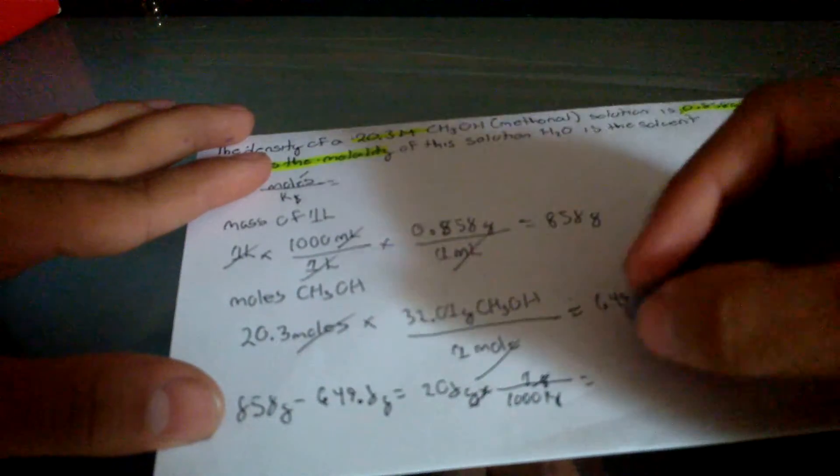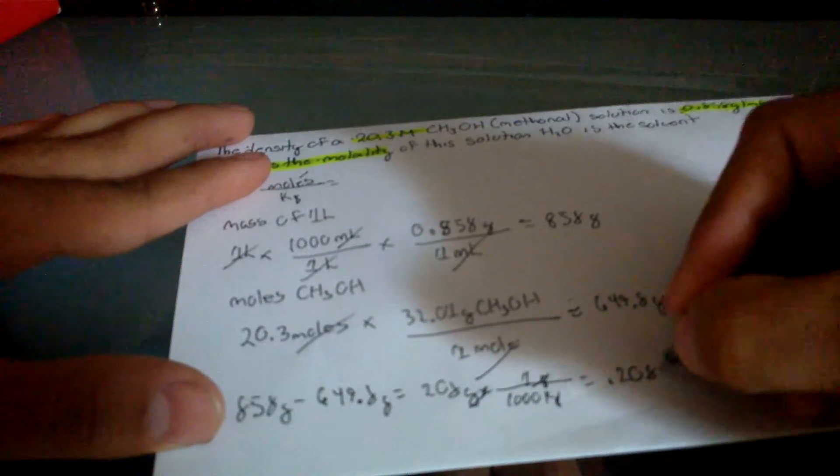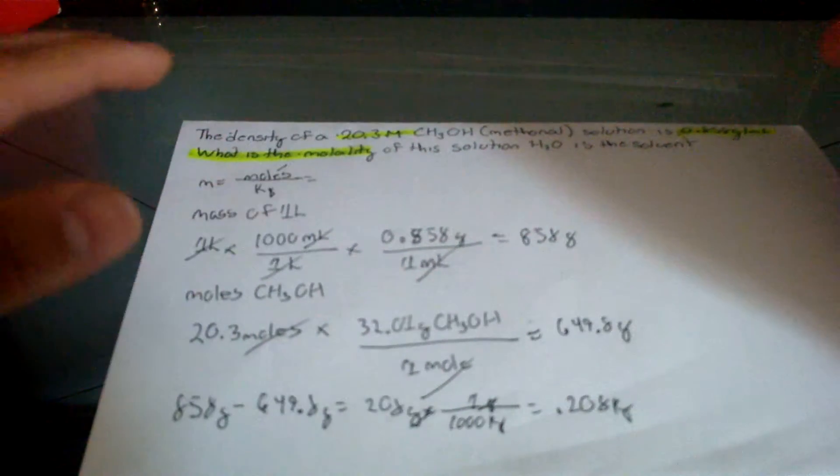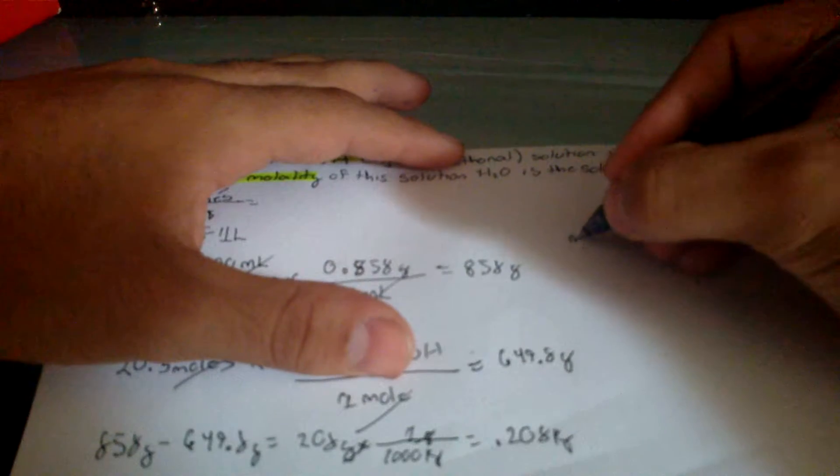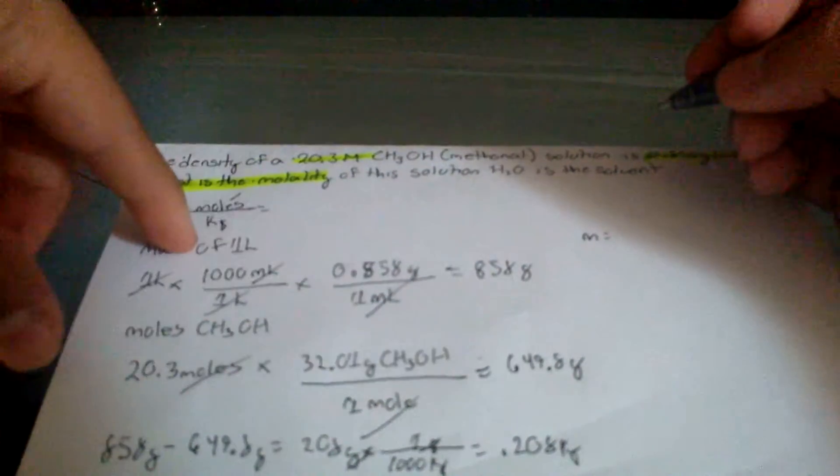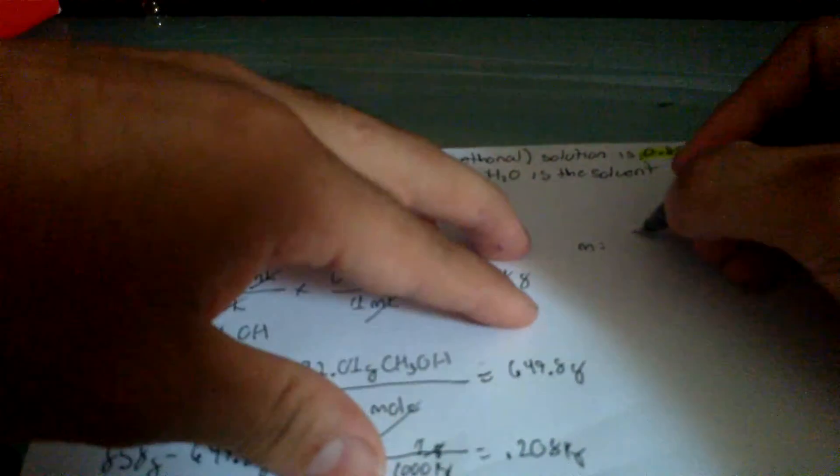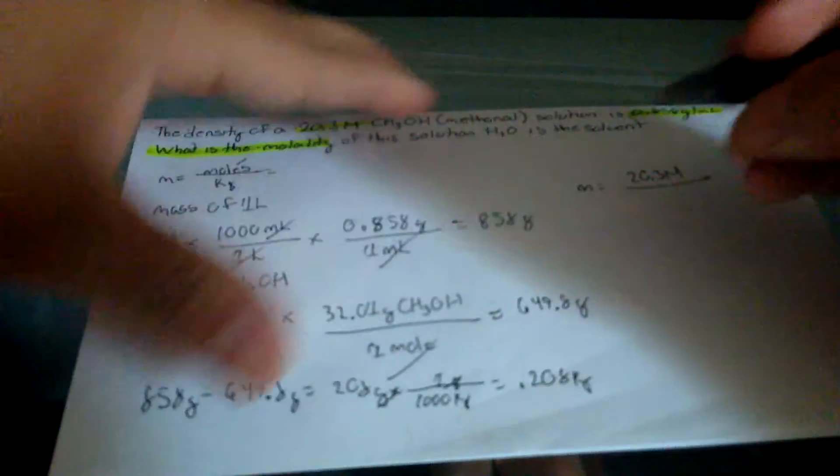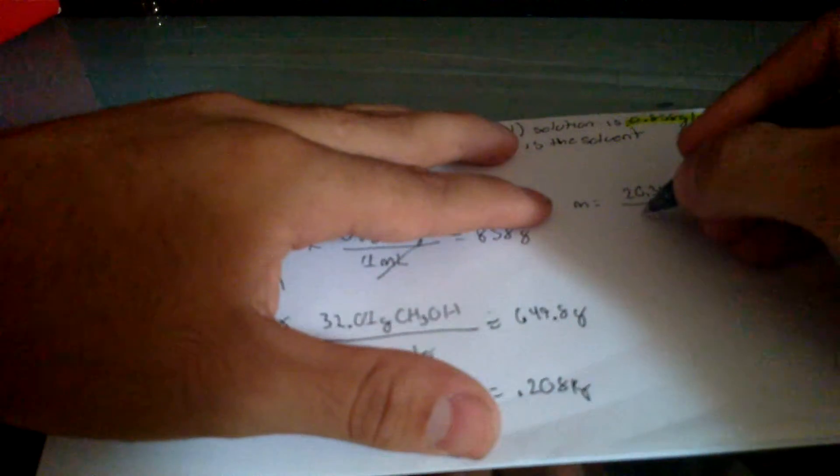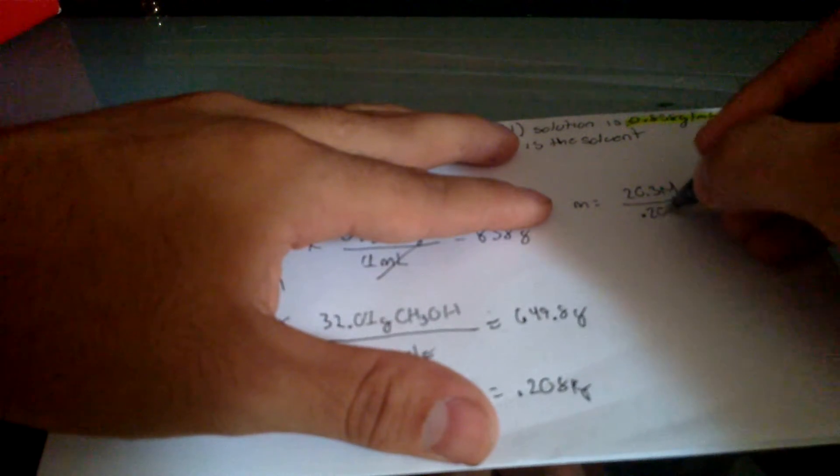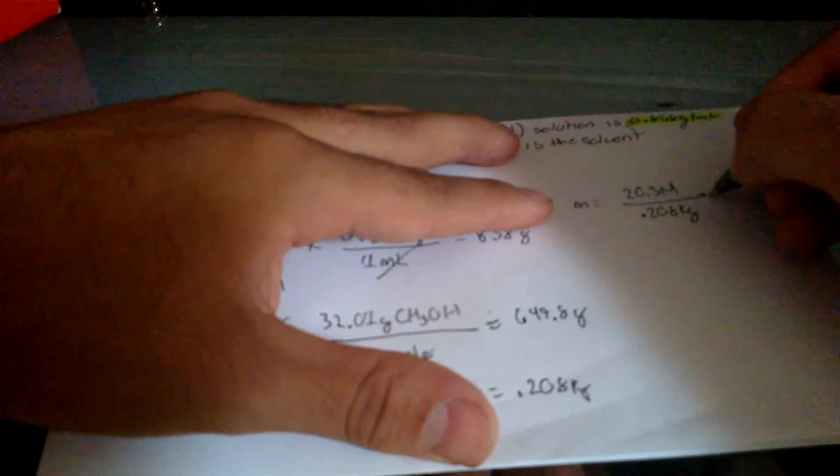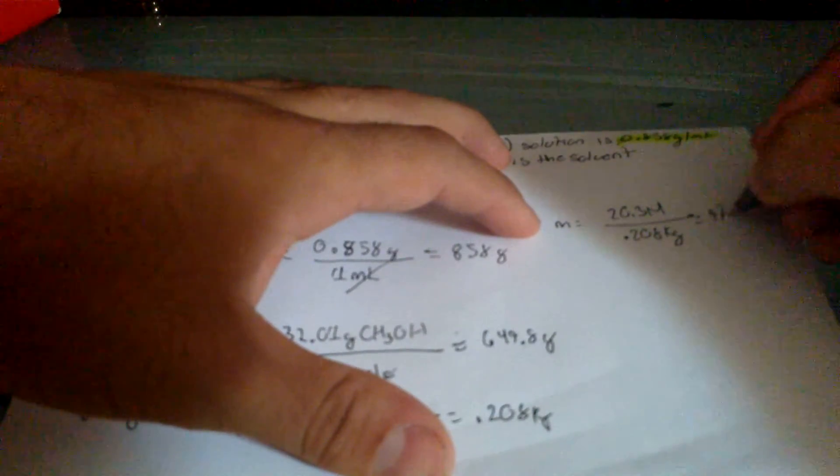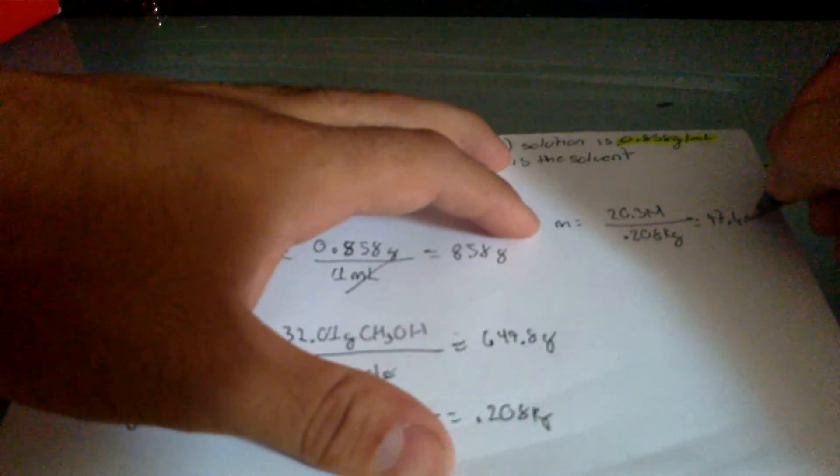Alright, now we can solve for molality. So we've got moles, 2.3, divided by our kilograms. So that should give you 97.6 for the molality.